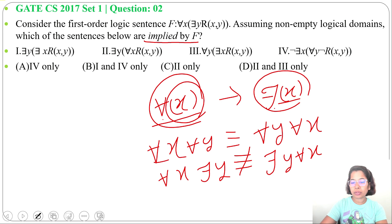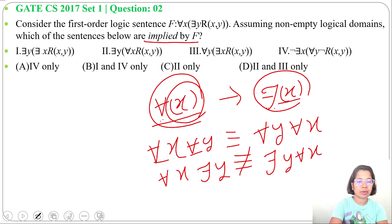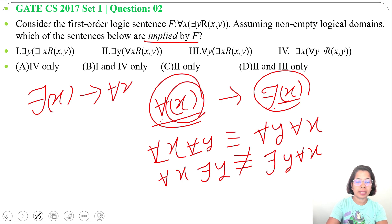If both quantifiers are the same, we can switch. If both quantifiers are different, we cannot switch. From a universal quantifier we can imply an existential quantifier, but from an existential quantifier like there exist X, it does not imply for all X.